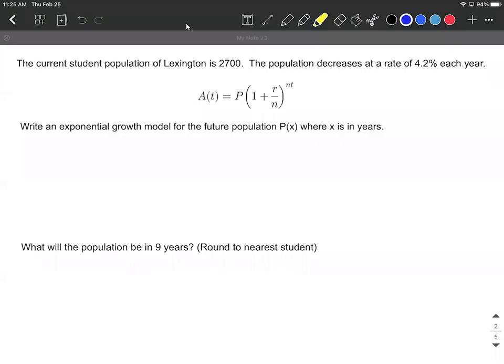In this example, we're given the current student population of Lexington is 2,700 and the population decreases at a rate of 4.2% each year.